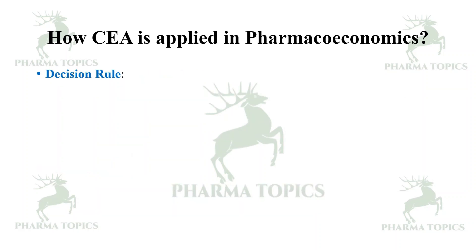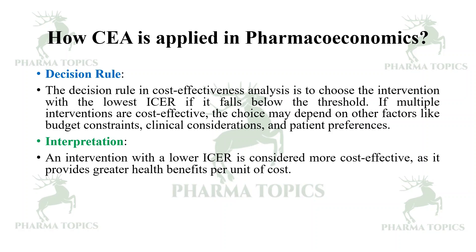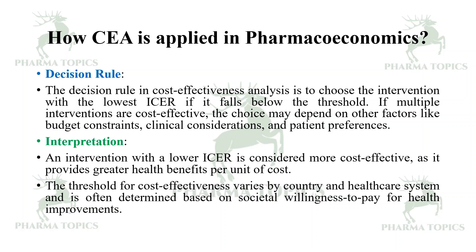The decision rule in Cost-Effectiveness Analysis is to choose the intervention with the lowest ICER if it falls below the threshold. If multiple interventions are cost-effective, the choice may depend on other factors like budget constraints, clinical considerations, and patient preferences. An intervention with the lowest ICER is considered more cost-effective as it provides greater health benefits per unit of cost. The threshold for cost-effectiveness varies by country and healthcare system and is often determined based on societal willingness to pay for health improvements.